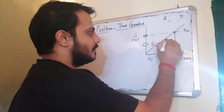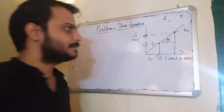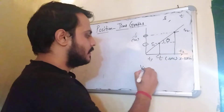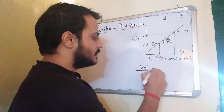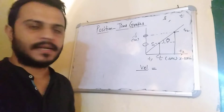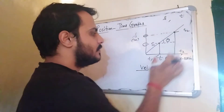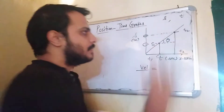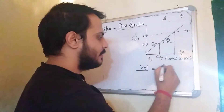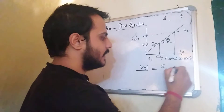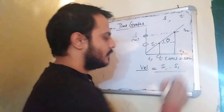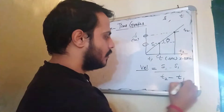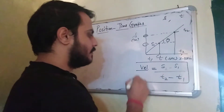Let us consider the angle theta. Now going to the velocity formula: velocity is change in position divided by time interval. So the change in position between these two intervals T1 and T2 is S2 minus S1, over the time interval T2 minus T1, and from this we can find velocity.